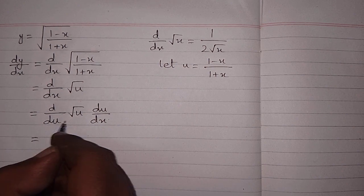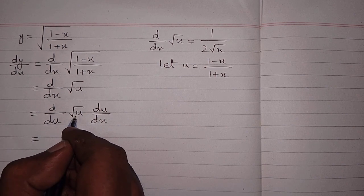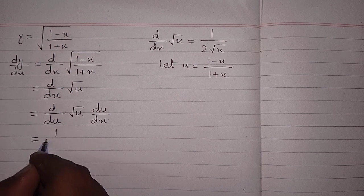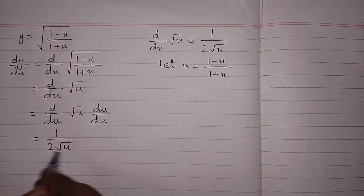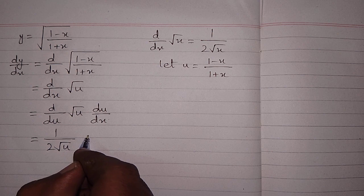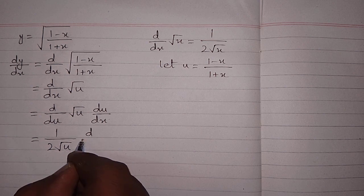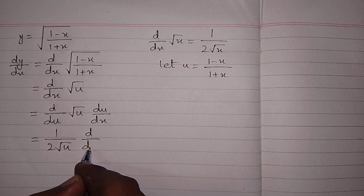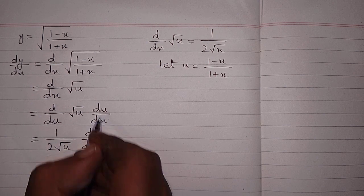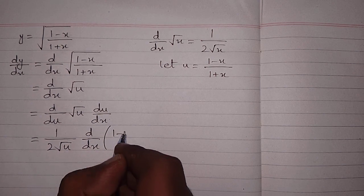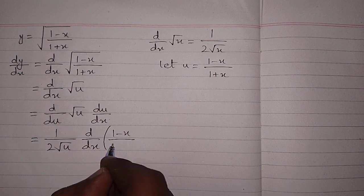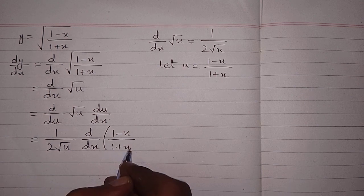Now the derivative of √u with respect to u is 1/(2√u). And here we put the value of u which is (1 - x)/(1 + x).